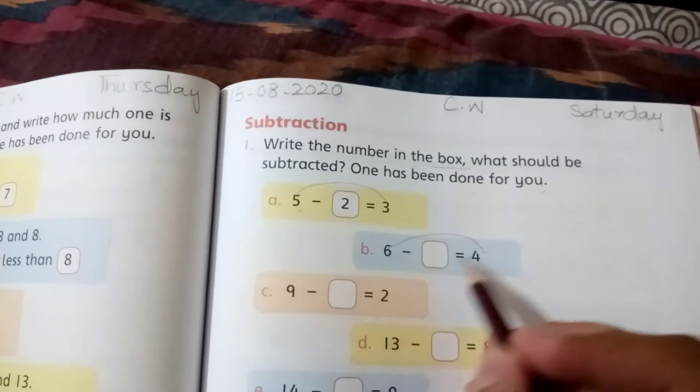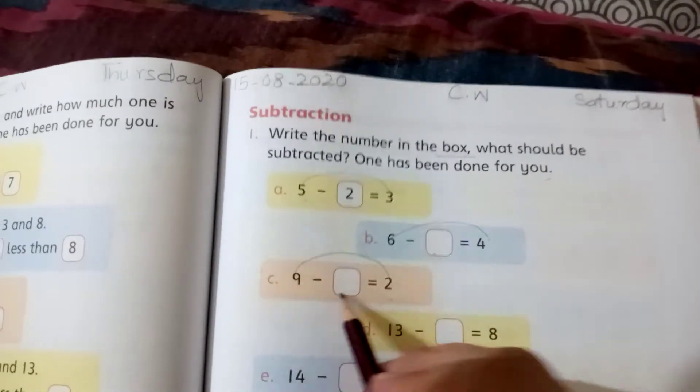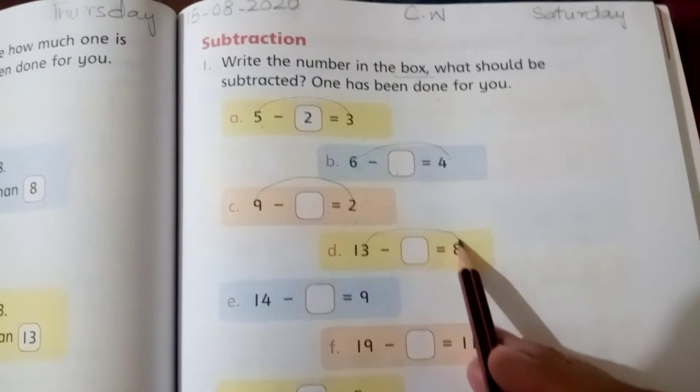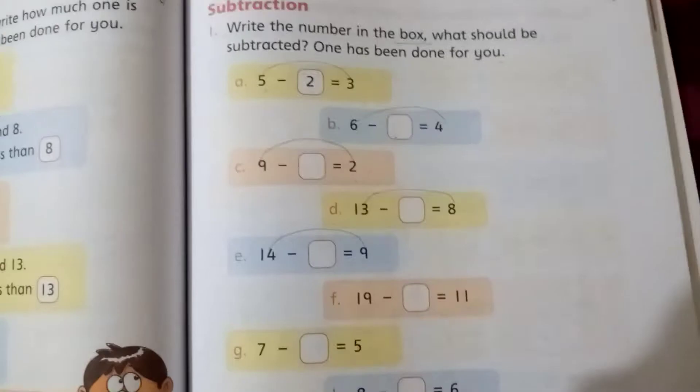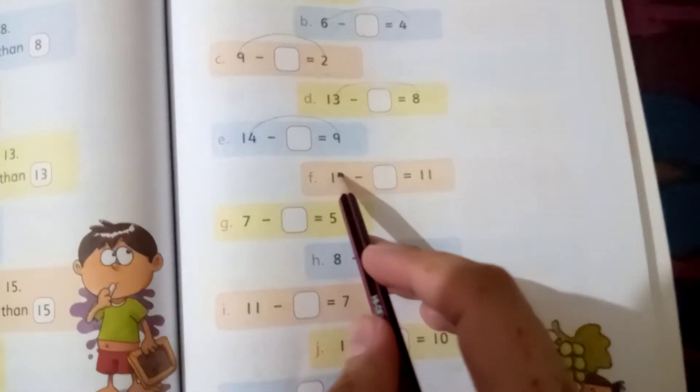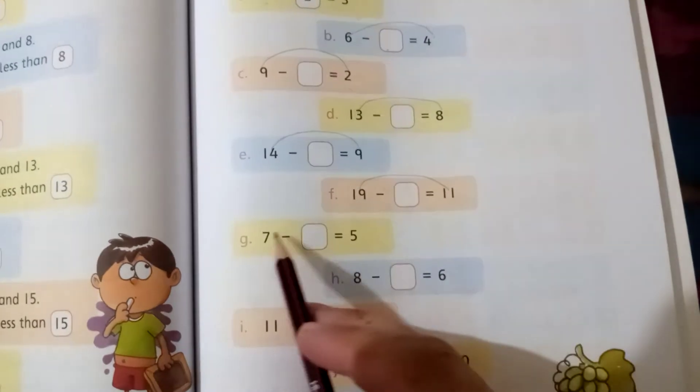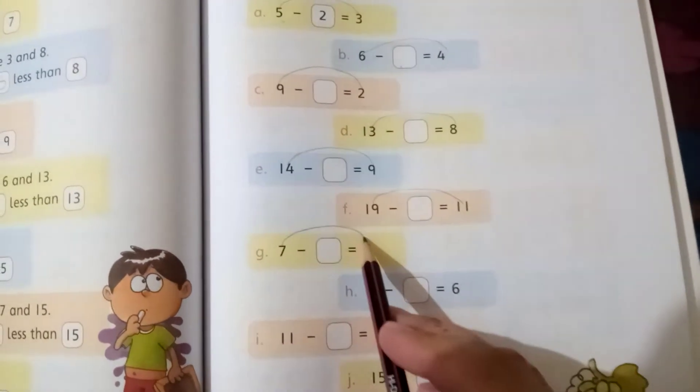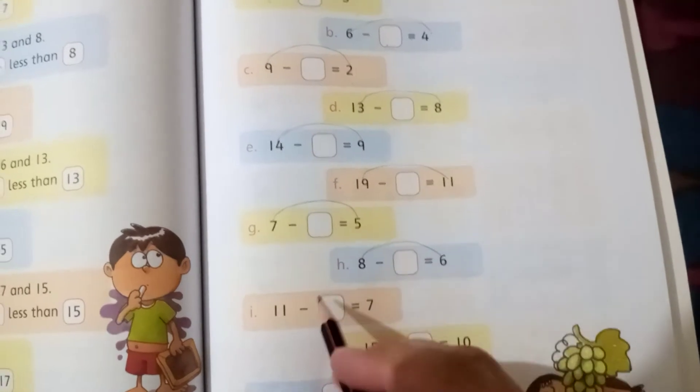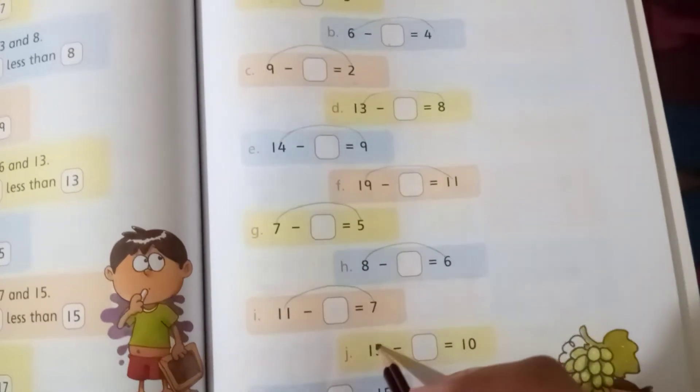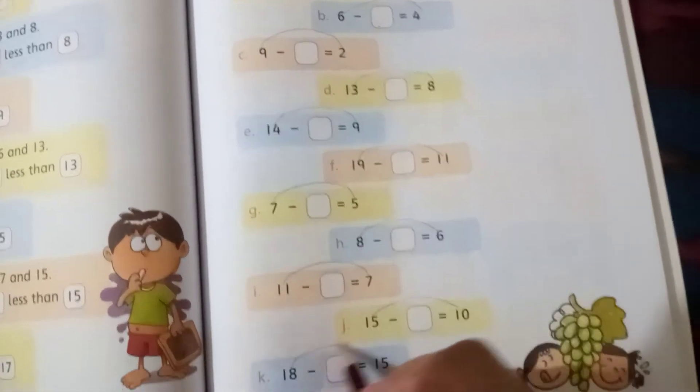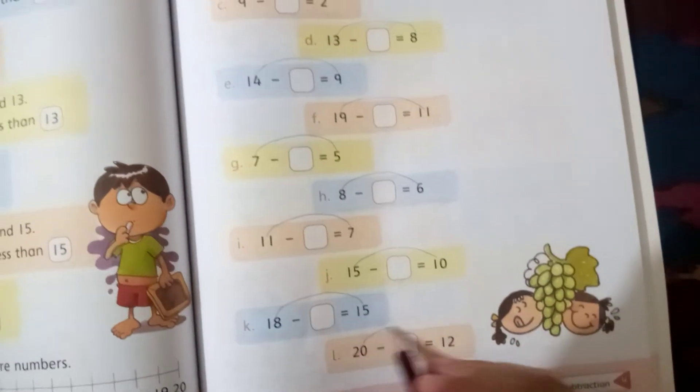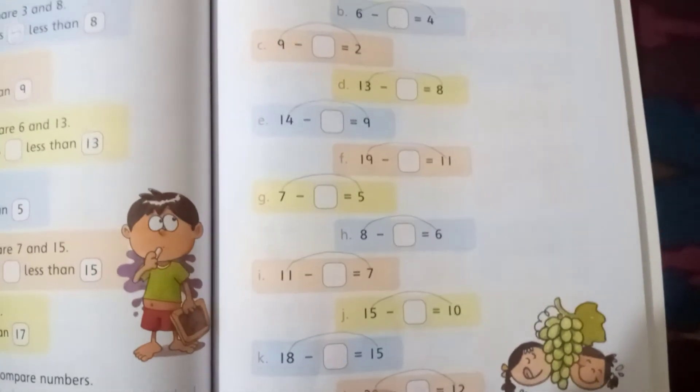If you do 6 minus 2, the answer will be 4. 9 minus 2, then the answer will be 7. 13 minus 8, and 14 minus 9. From 19 to 11, from 7 to 5, from 8 to 6, from 11 to 7, from 15 to 10, from 18 to 15, from 20 to 12. So your answer will be left in the box.